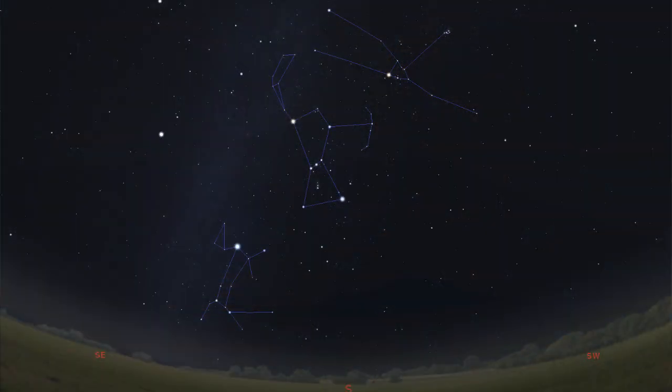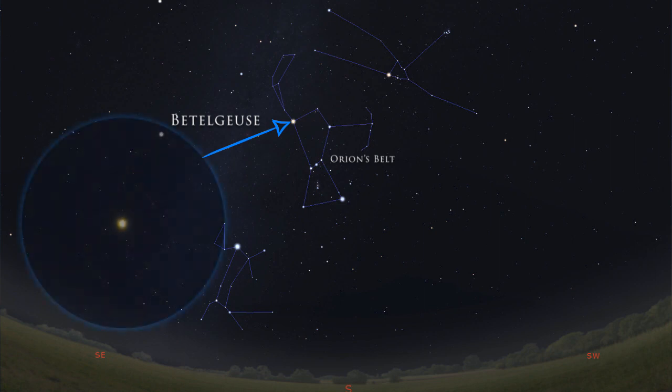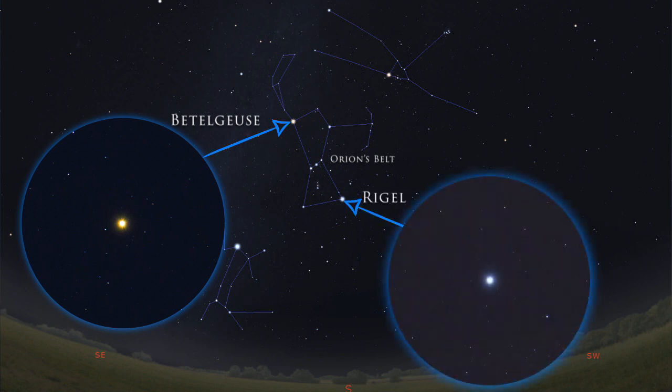First, check out the bright red star Betelgeuse, found here above Orion's Belt. It should look something like this through your telescope. Second, check out the bright blue-white star Rigel, found here below Orion's Belt. Have you found these without issues? Great! Let's move on to our three main targets.